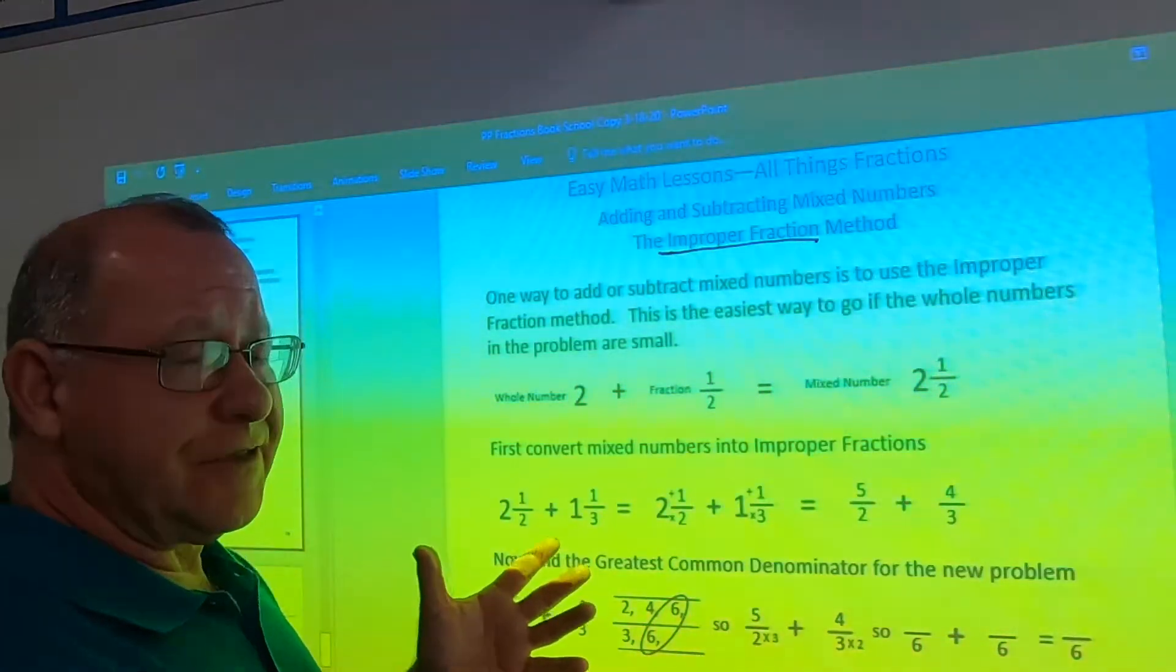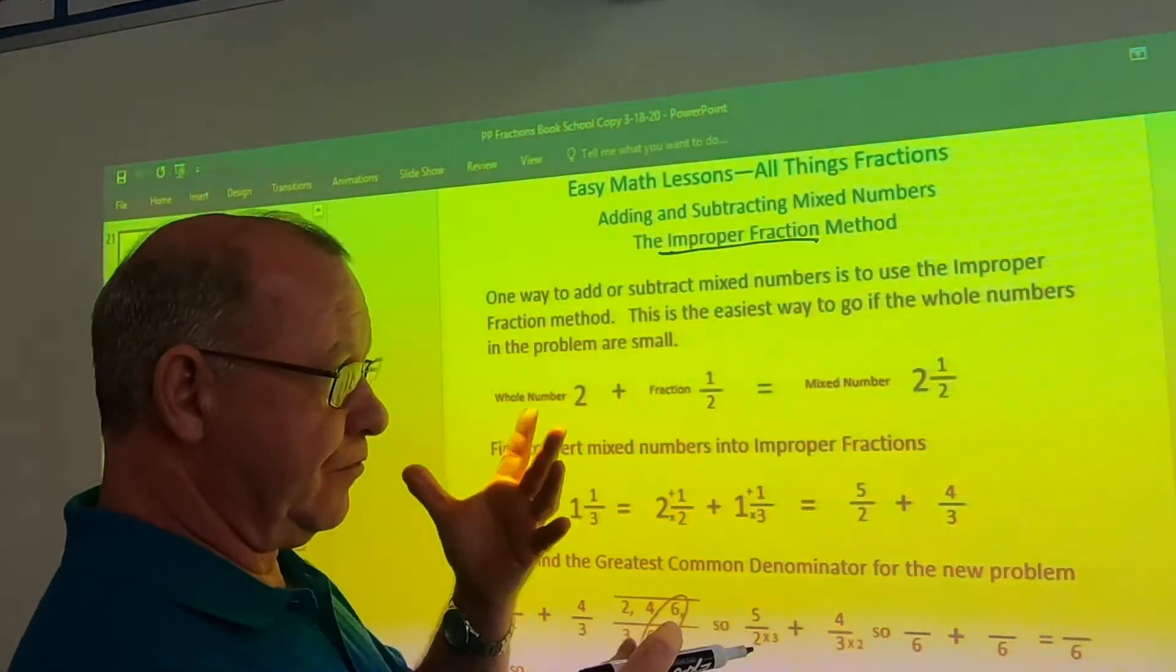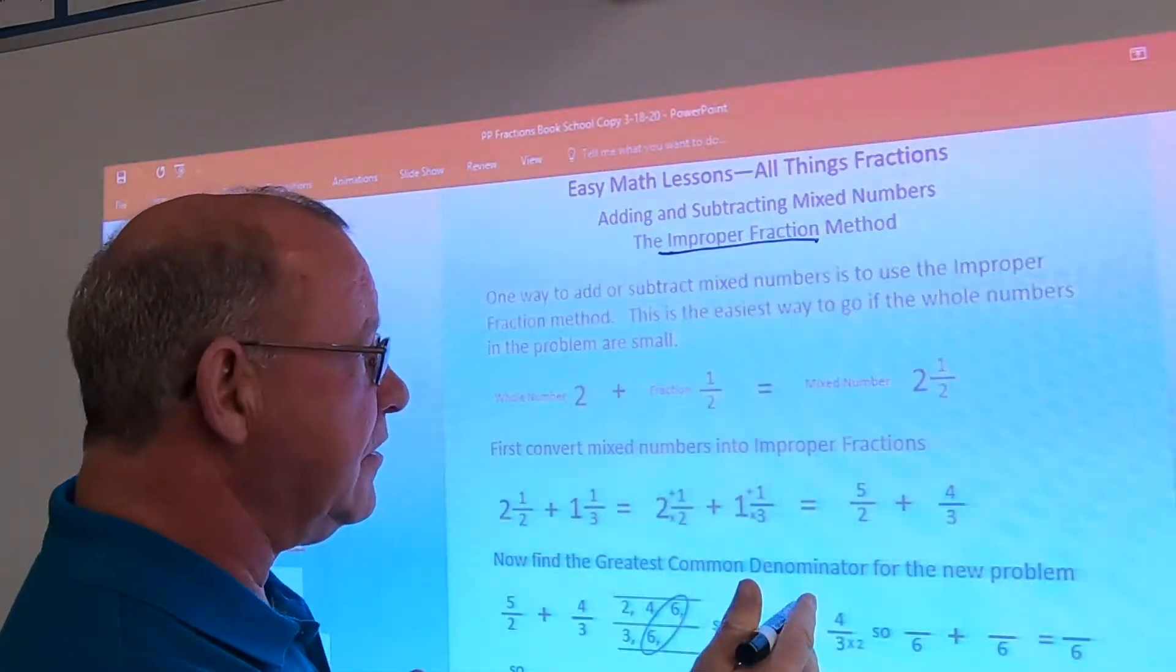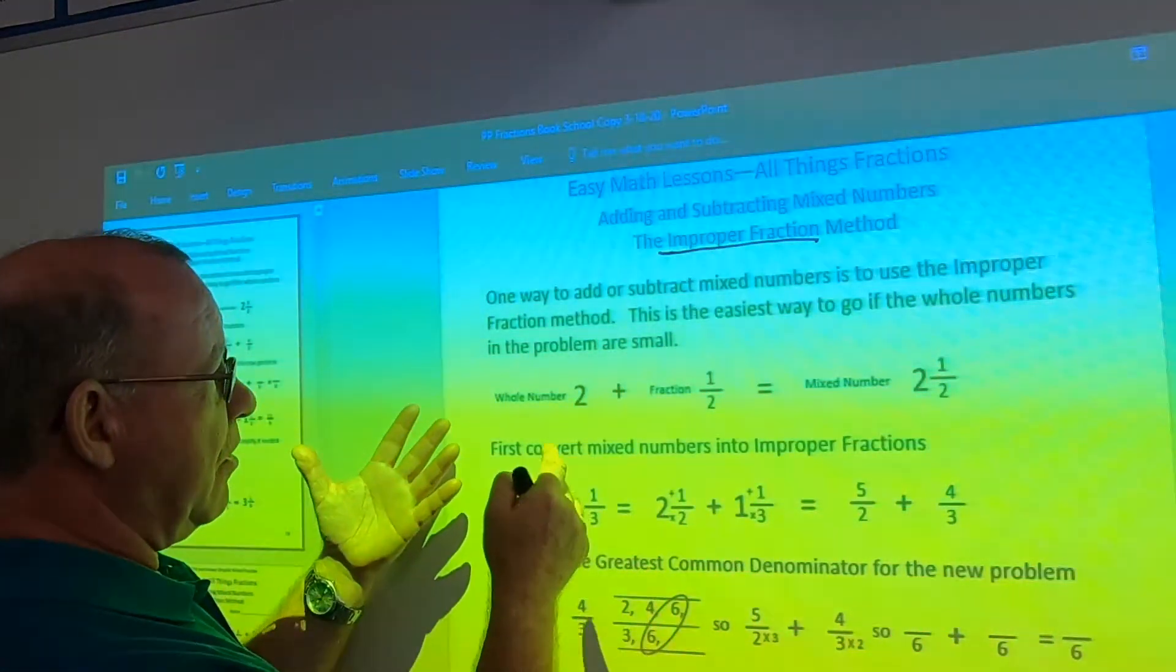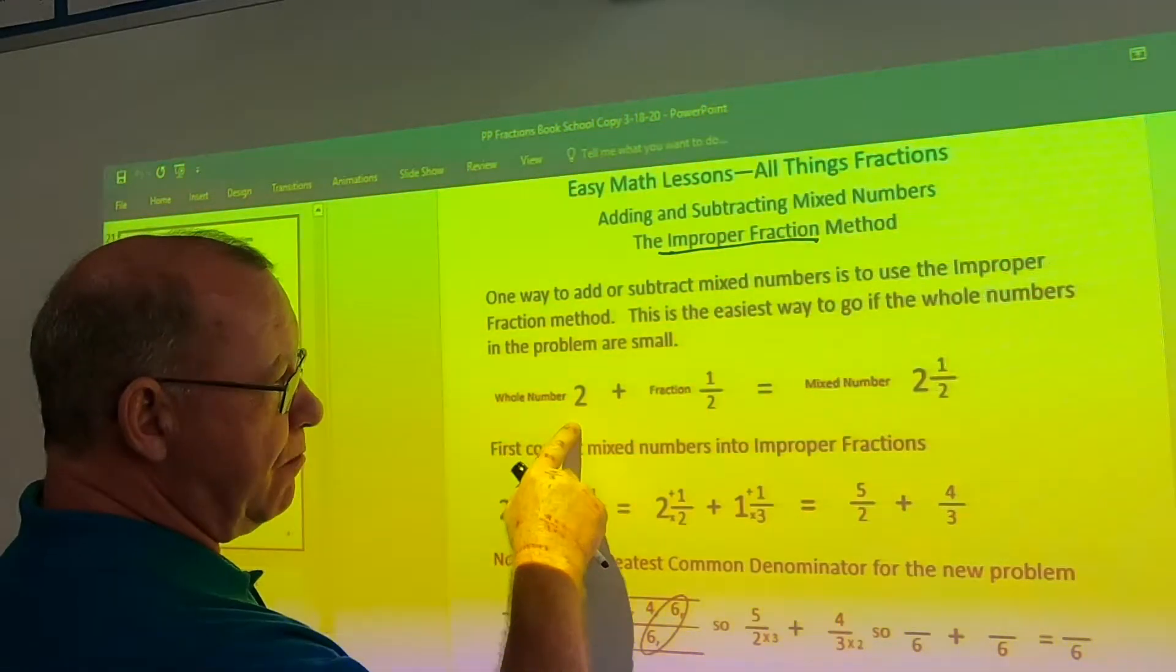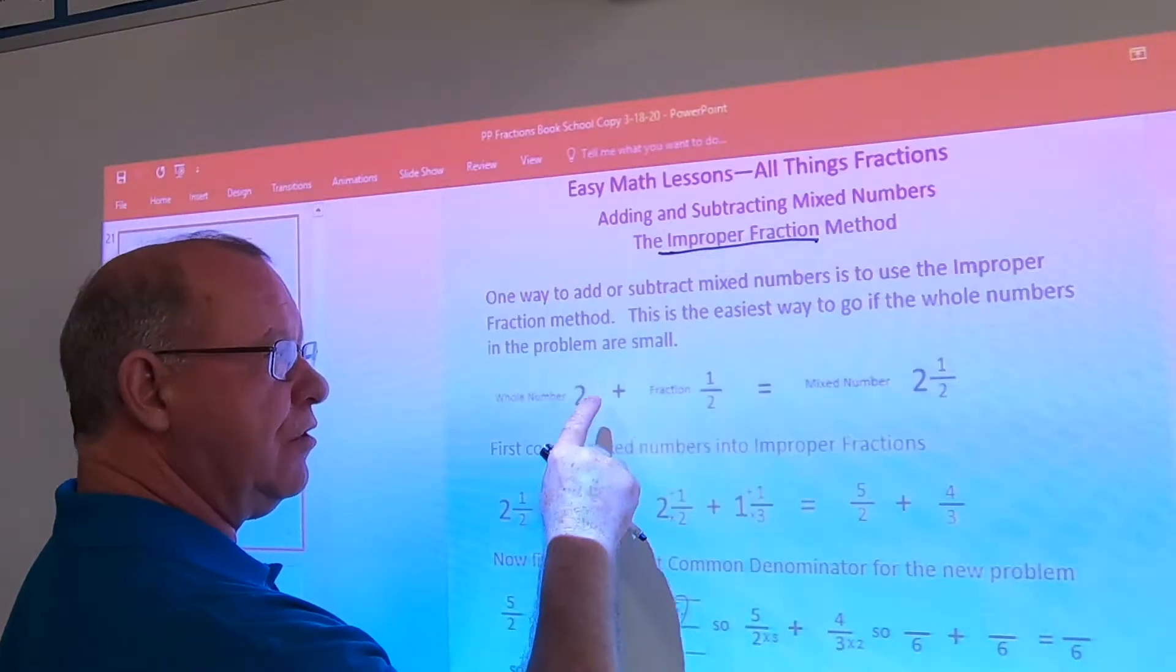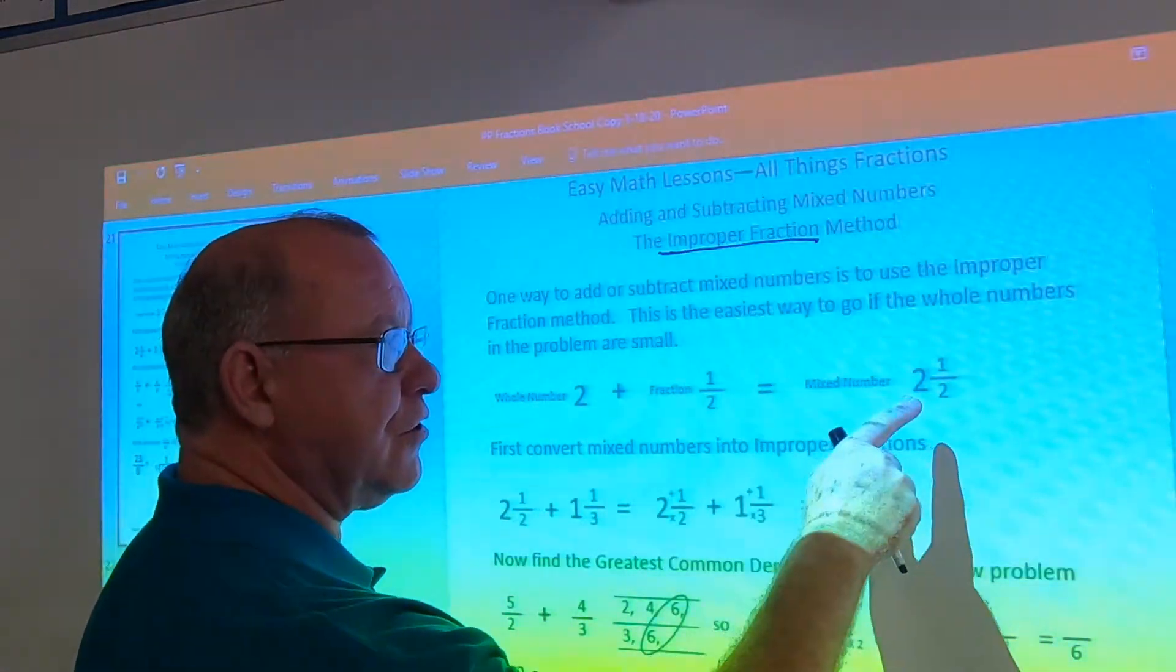There is nothing really easy about adding or subtracting mixed numbers. It's a complicated process, takes several steps. With a mixed number, mixed number is a whole number plus a fraction. Like two and a half is two plus one half equals two and a half.